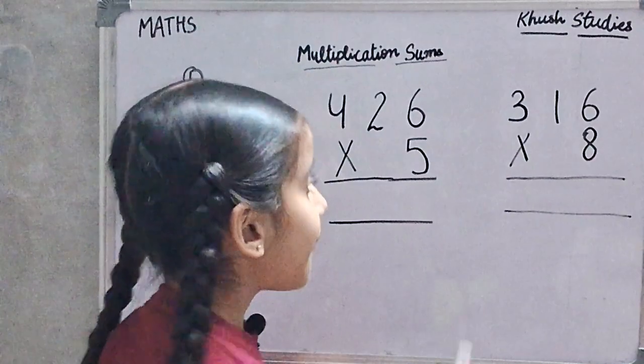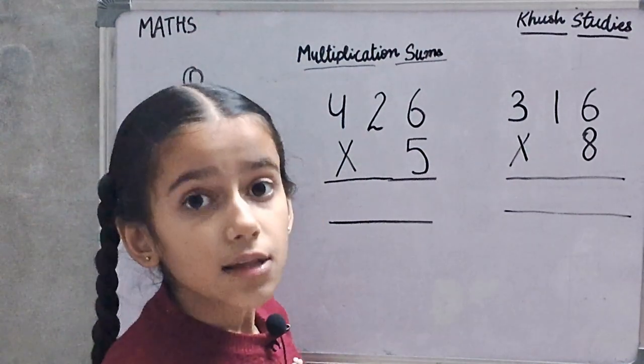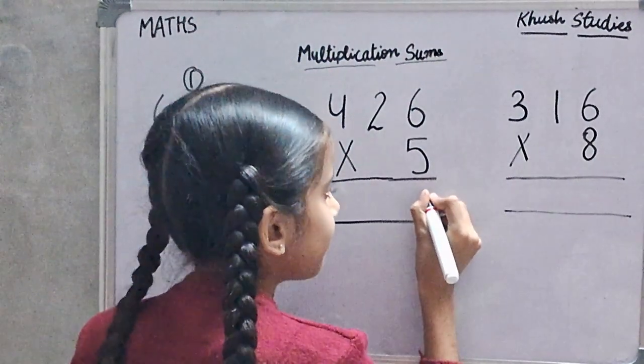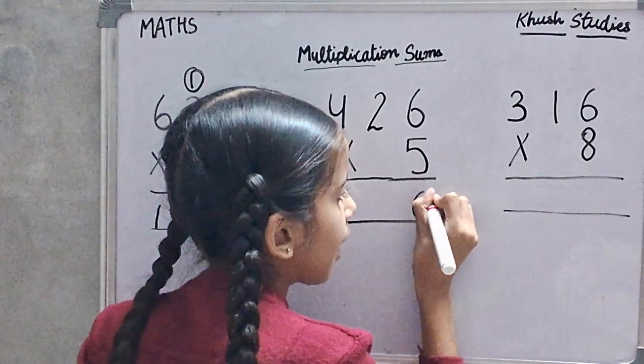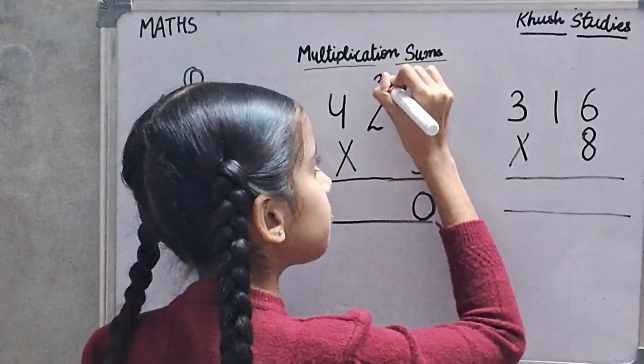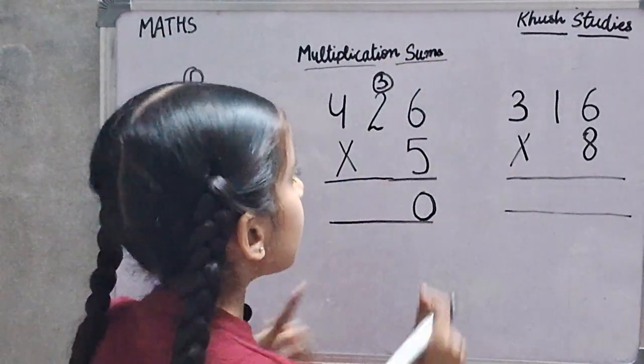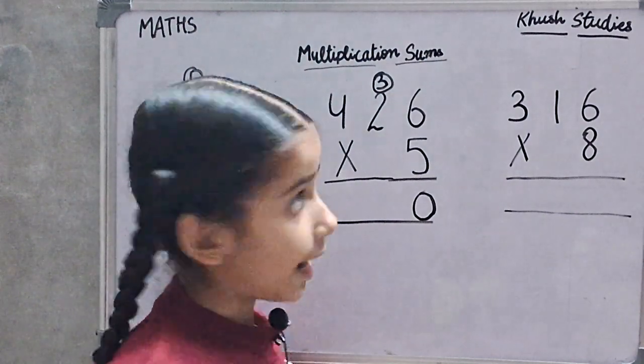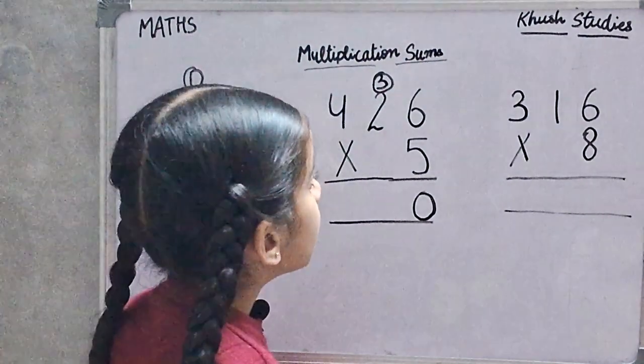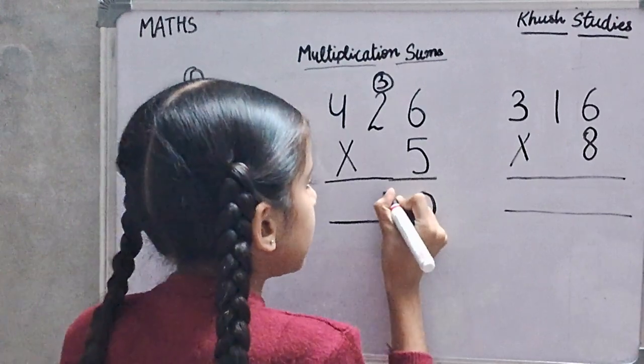First we will multiply 6 by 5. 6 by 5 is 30. 5 times 2 is 10. 10 plus 3 is equal to 13.